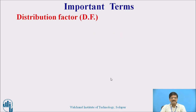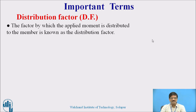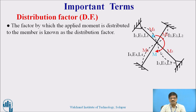Let us continue with another very important concept: distribution factor. Whenever we apply a moment to any joint, the moment is transferred to different members as per their distribution factor. The factor by which the applied moment is distributed to a member is known as the distribution factor. Suppose four members are meeting at one particular joint with different support conditions, and this joint is subjected to a moment M — some fraction of M is transferred to each member.